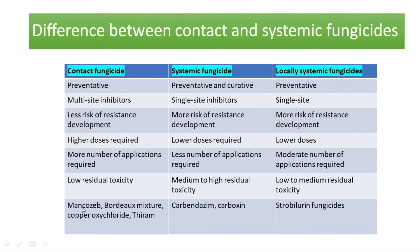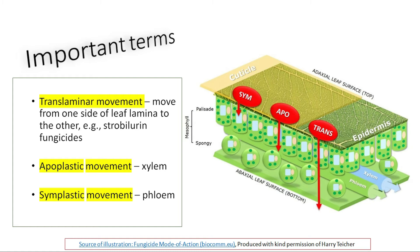Examples of contact fungicides include mancozeb, Bordeaux mixture, copper oxychloride, and thiram. Bordeaux mixture is the first discovered fungicide. Locally systemic fungicides are strobilurin fungicides. Strobilurin fungicides were originally obtained from a mushroom called Strobilurus. The chemical was taken from there, modified, and synthesized chemically, giving us several kinds of strobilurin fungicides used today.